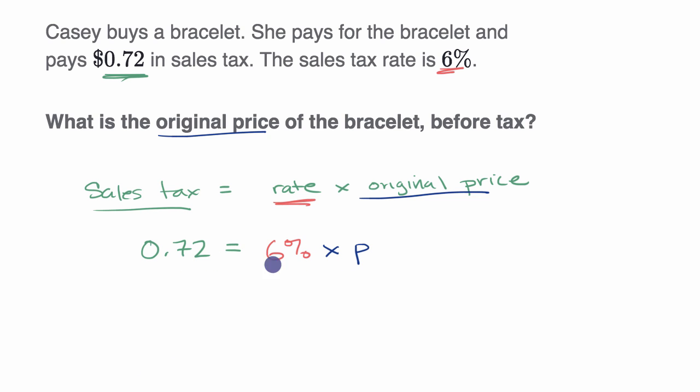We have a fairly straightforward equation now. I'm just going to rewrite everything as a decimal. So we could write 0.72 equals—6% is the same thing as six per hundred, which is six hundredths—0.06 times P.